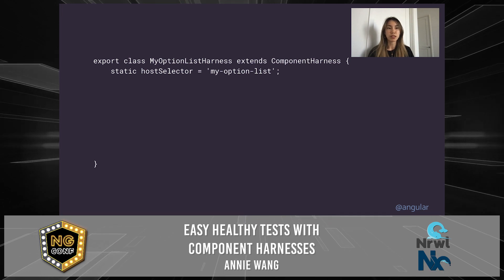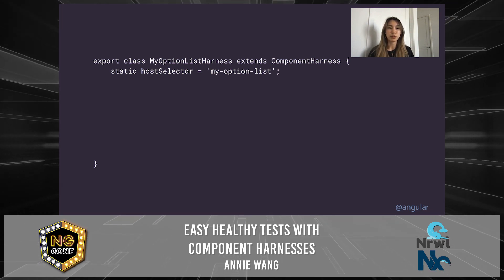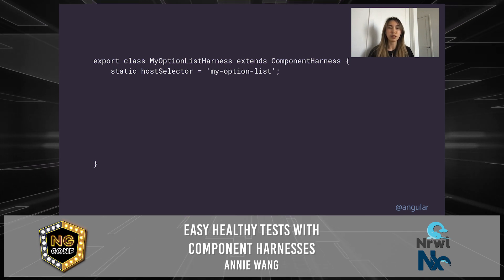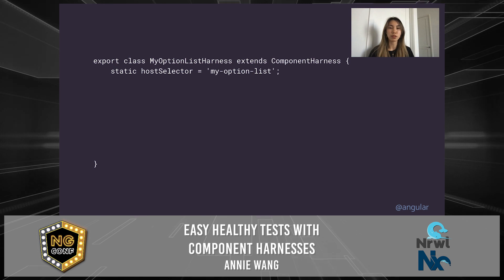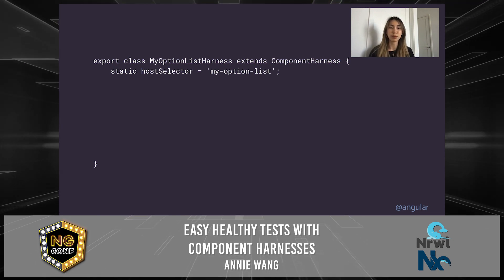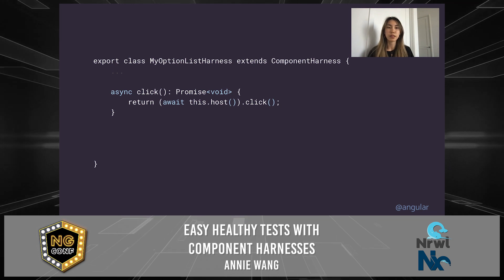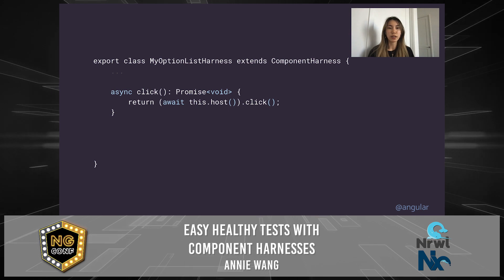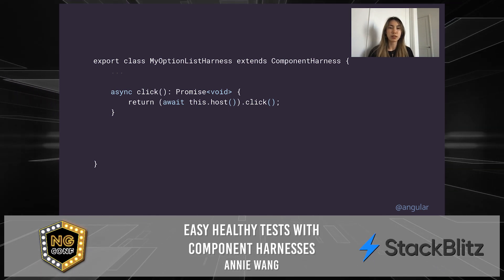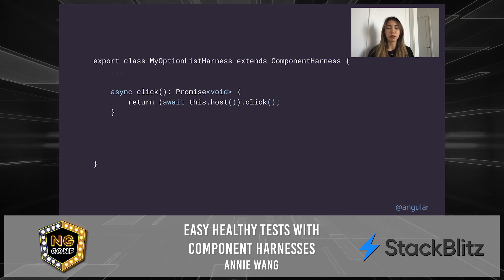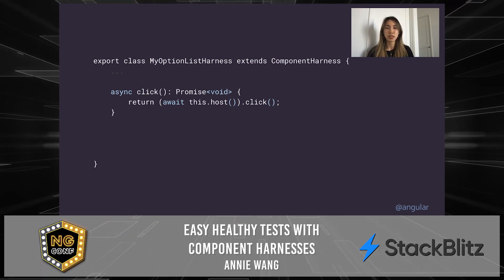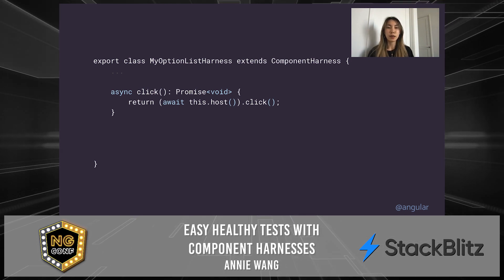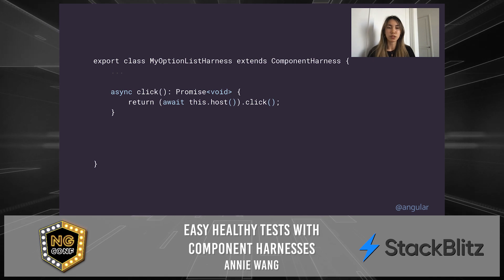Angular Material components each have their own harness, but we also recommend creating your own custom harnesses, and here's how you would do that. Let's say you have an option list component. The first thing you would do is extend the CDK component harness. Then you need a way to locate your component in your test, which you can do through the host selector — in this case, something like my-option-list. Methods in harnesses should be async and return a promise. For example, to click on the option list, the method would be async click returning promise void, and in the method we'd just click on the host.